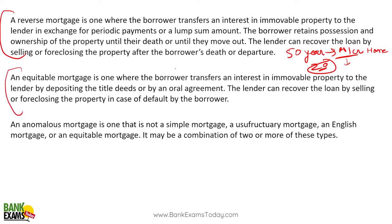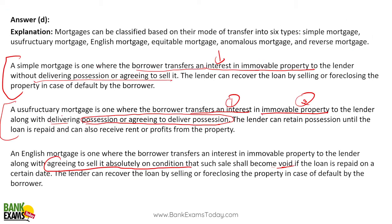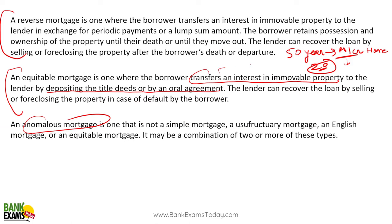Equitable mortgage is one where the borrower transfers an interest in the immovable property to the lender by depositing the title deeds or by oral agreement. In this case the lender can sell the property if the borrower defaults — the borrower keeps the property documents with the bank, and on default the bank can sell it. Anomalous mortgage is a combination of two or more of the above types of mortgages — it is not a simple, usufructuary, or English mortgage on its own.